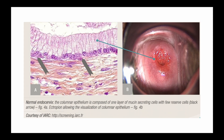In this diagram we find the normal endocervix, which is formed by the columnar epithelium. It is composed of one layer of mucus-secreting cells with few reserve cells, and the arrows are pointing to the reserves of those mucus-secreting cells.